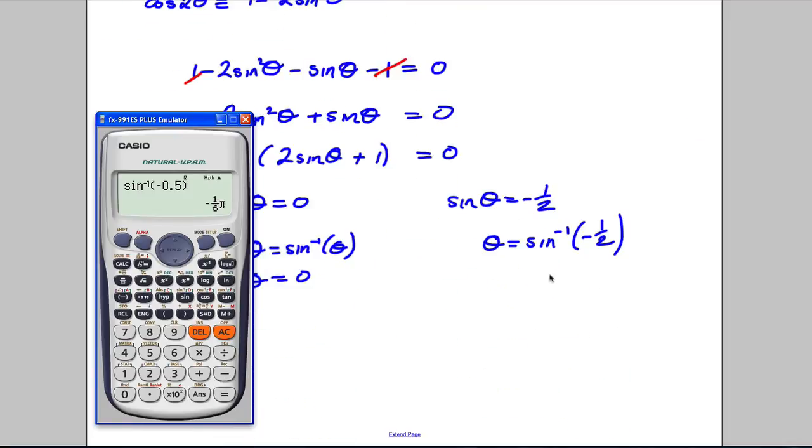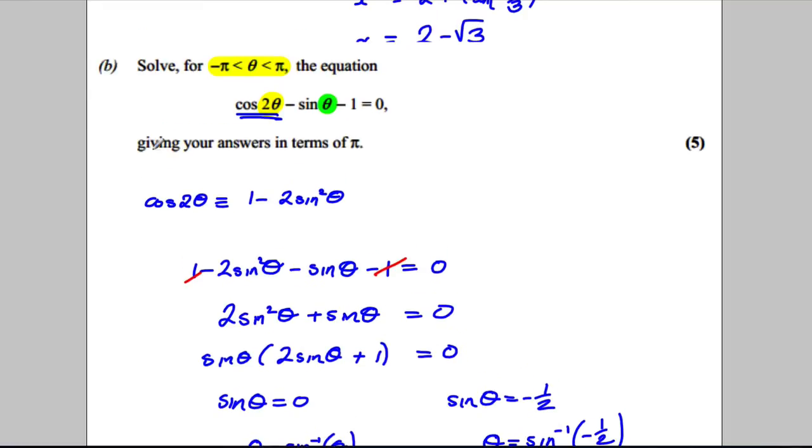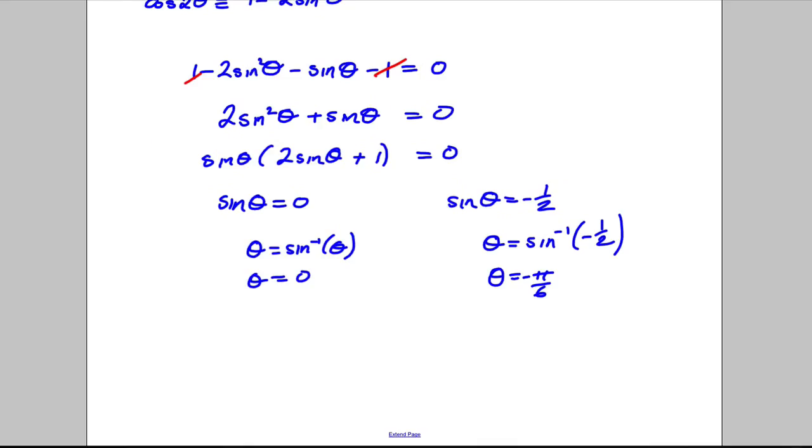Yeah, we're looking in terms of pi. So theta is negative pi by 6. So going between negative pi and pi, let's draw out the sine graph and see all the places where we'd have an answer.